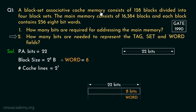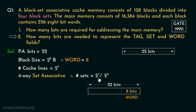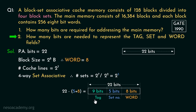The blocks inside the cache are divided into 4 block sets — in other words it's a 4-way set associative cache organization. Therefore the number of sets is the number of lines, 2 to the power 7, divided by 4 (which is 2 squared), giving 2 to the power 5. Therefore 5 bits are used for the set number. The tag bits are found by subtracting the set bits and word bits from the physical address bits: 22 − 5 − 8 = 9 bits for the tag field. So tag: 9 bits, set: 5 bits, word: 8 bits.